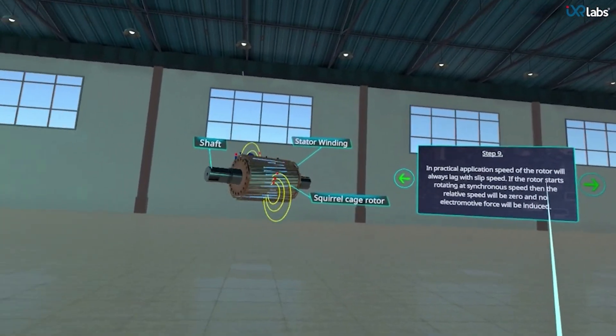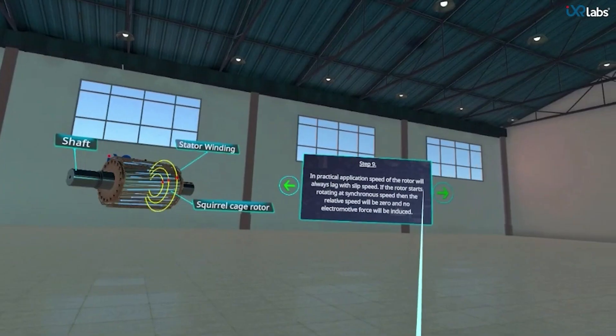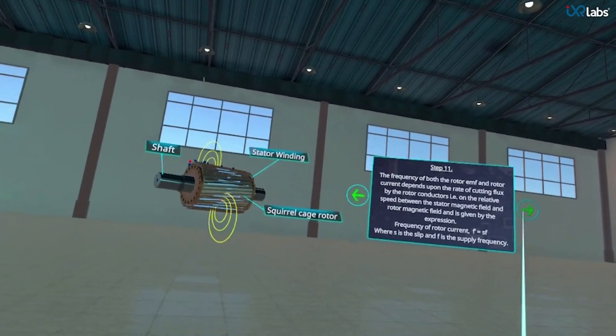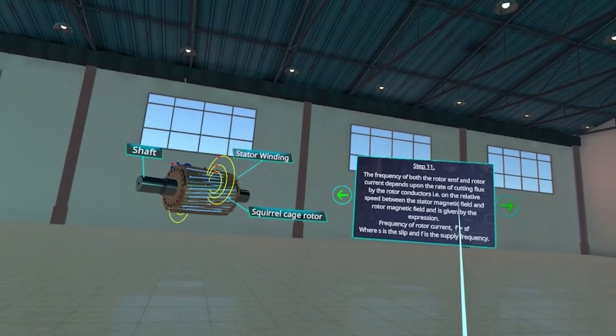In step 9, if the rotor starts rotating at synchronous speed then the relative speed will be zero and no EMF will be induced. In step 10, the rotor always rotates at less than synchronous speed. The frequency of both the rotor EMF and rotor current depends upon the rate of cutting flux by the rotor conductors.